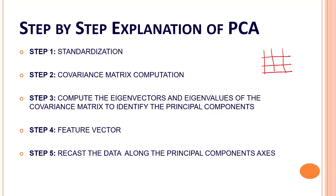Then comes the standardization part. In this step, we will standardize our dataset such that a feature with high variance is considered more important compared to a feature with low variance. If the importance of a feature is independent of its variance, then we divide each data item by the standard deviation of that specific column or feature. After standardizing, we will name this matrix Z.